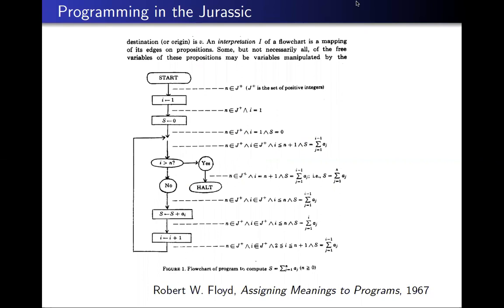Let me start with an excerpt from a paper of Bob Floyd, "Assigning Meanings to Programmes," a well-known paper from over 50 years ago. In this part of the paper, he's presenting a programme whose syntax is given by a flowchart and whose semantics is given by what he calls an interpretation — assigning to every edge in the flowchart a proposition involving the programme variables that should be true every time that edge is traversed. In modern terminology, we'd call such a proposition an invariant.